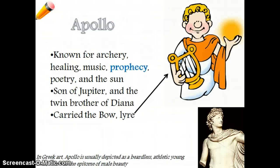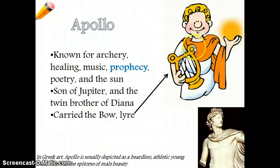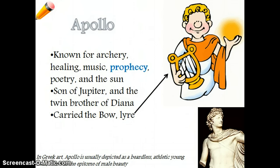Apollo was known for archery, healing, music, and prophecy. If you went to see the oracle, that was at the temple of Apollo. He was also known for poetry and is the god of the sun. He's the son of Jupiter and Diana's twin brother, and was always shown carrying a bow and arrow or a lyre — a harp-like instrument. He is usually shown as a young, athletic man — considered the most beautiful man imaginable, especially in Greek art.